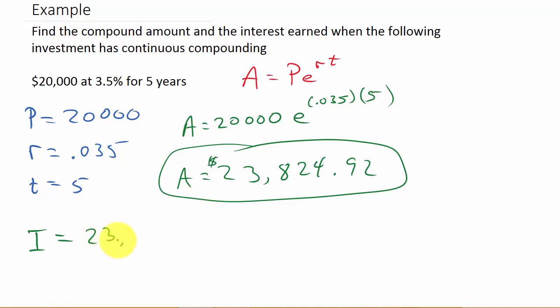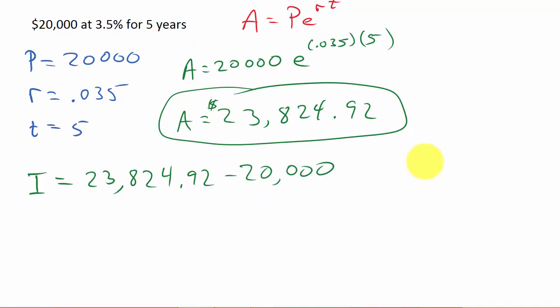So, that's going to be the $23,824.92 minus the $20,000. And so, that's going to give us our interest is $3,824.92.